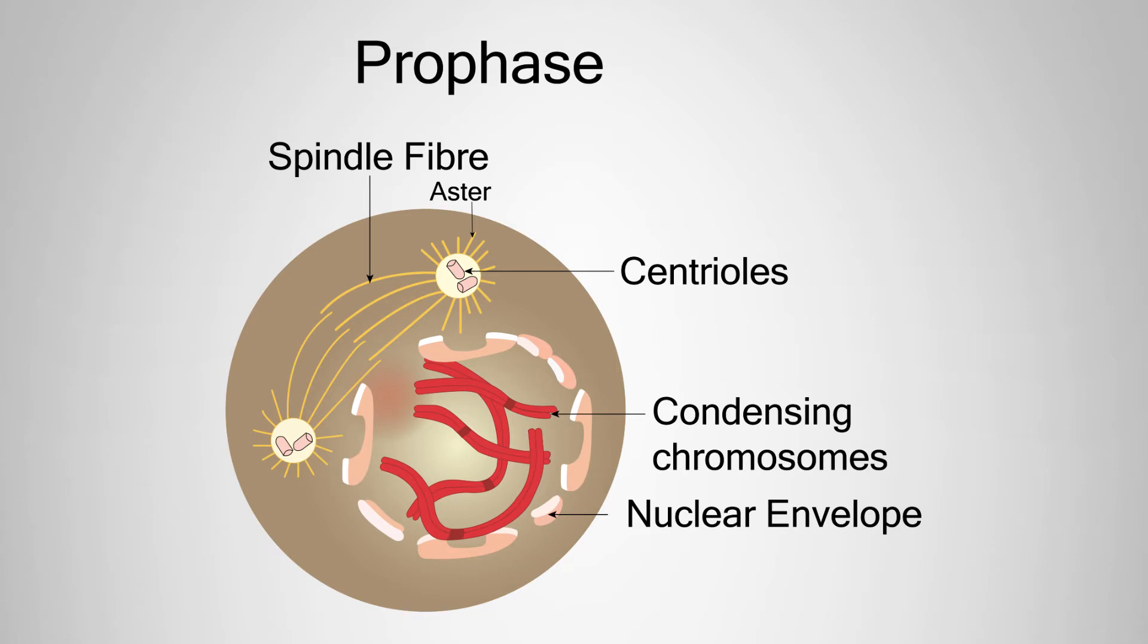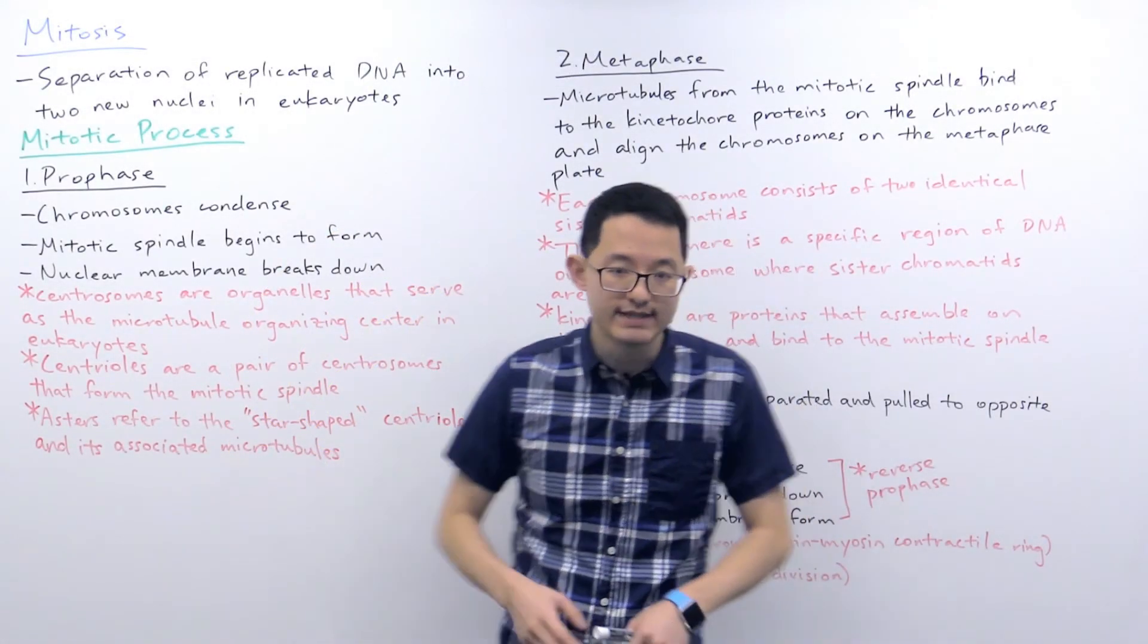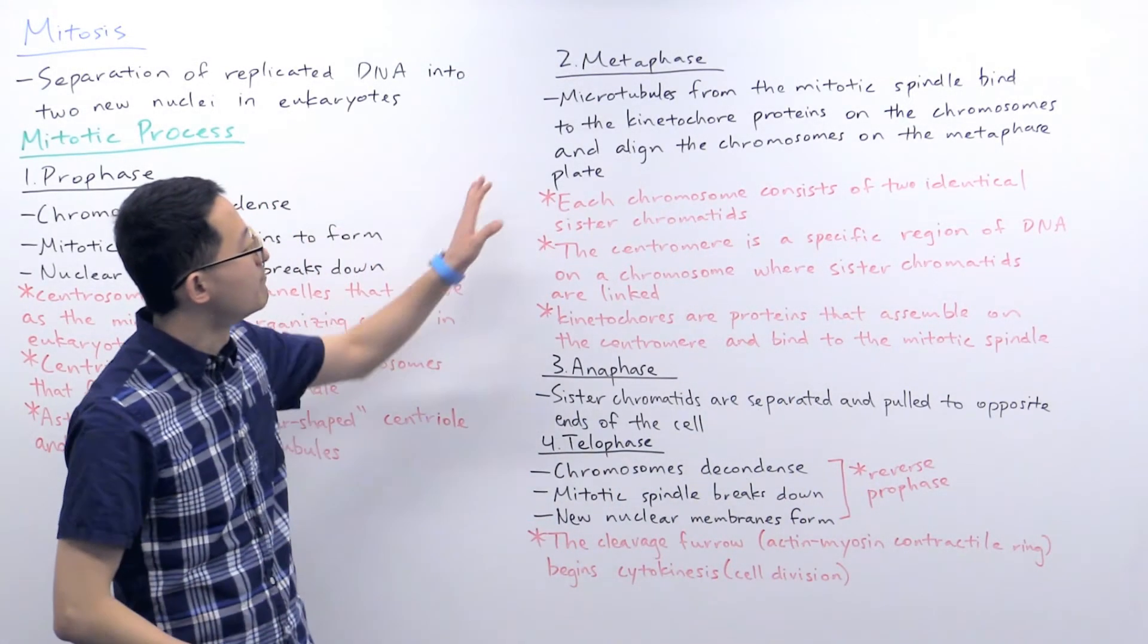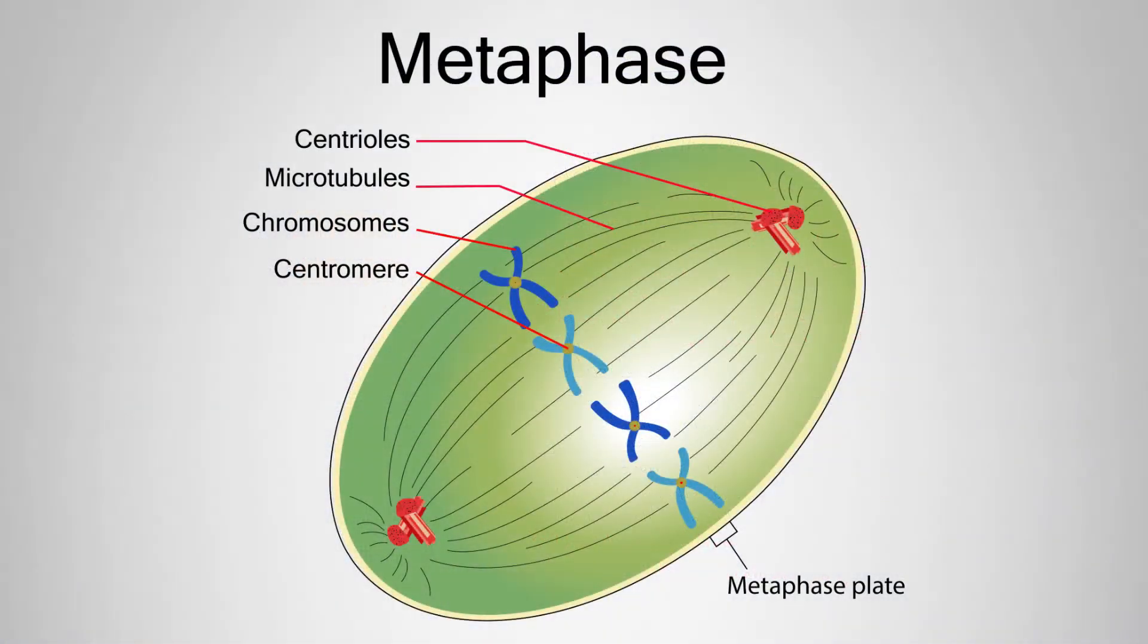Asters is another term that you're going to see on the exam. Asters, as you can see in the diagram, are referring to the star-shaped centriole and its associated microtubules. So this is prophase.